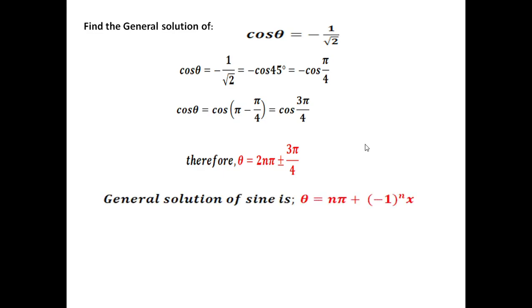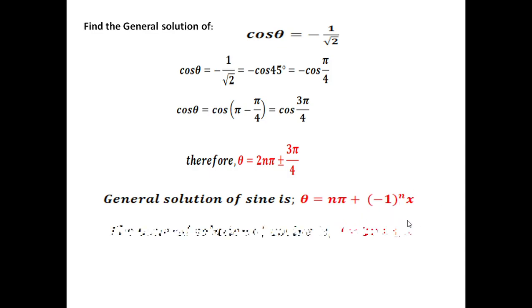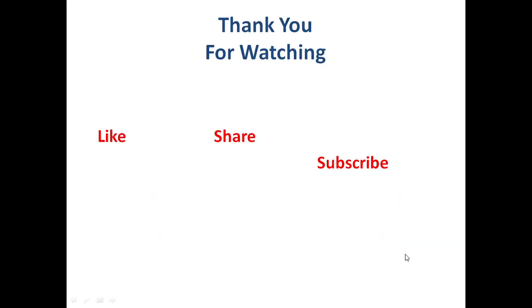Therefore we can conclude: the general solution of sine is θ = nπ + (−1)ⁿ · x, and the general solution of cosine is θ = 2nπ ± x. Thank you for watching. That's all for this video.